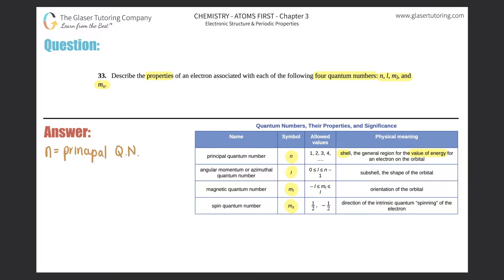The shell number also tells you the probability of where an electron is in a specific orbital. For example, if this is the nucleus — shaded in yellow — the shells around it represent the n values. In green, n equals one; in blue, n equals two, and so on, because electrons are always outside the nucleus.